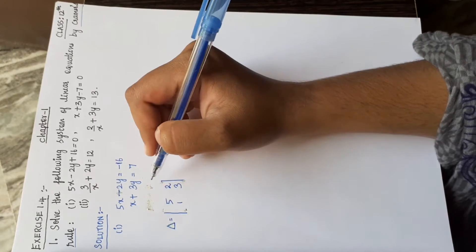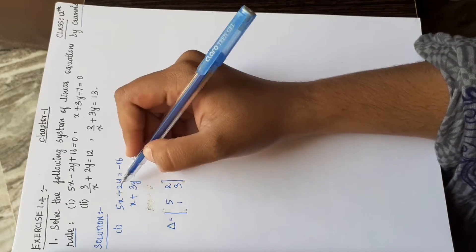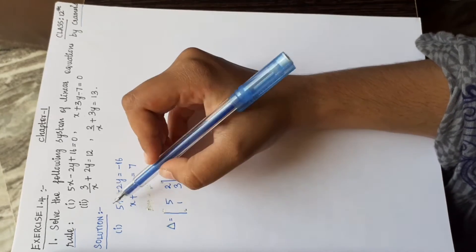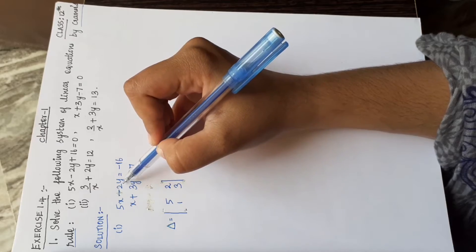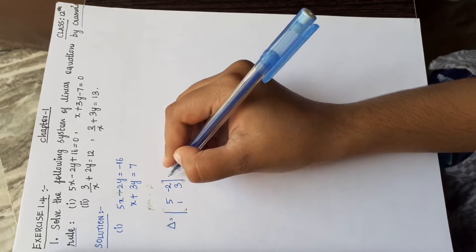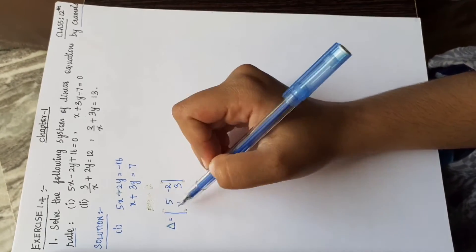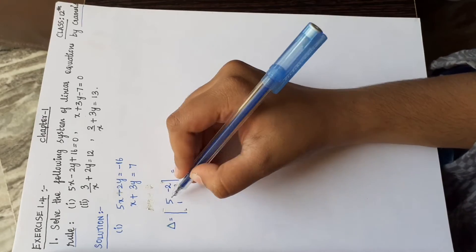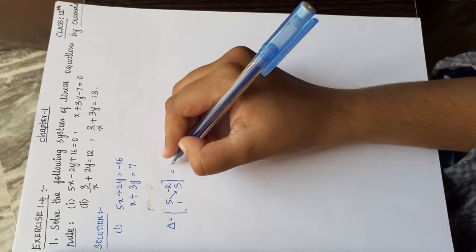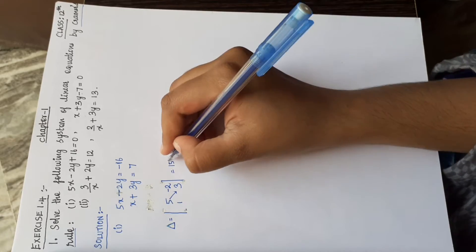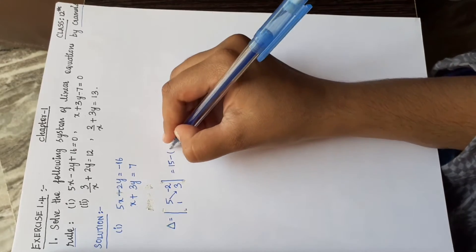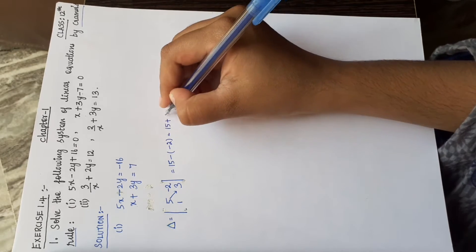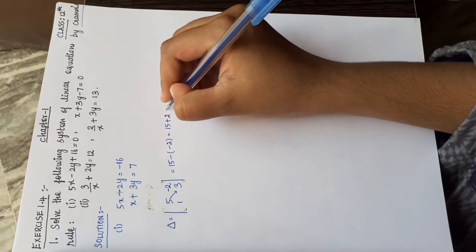Now find the delta value — the determinant of the coefficients of x and y. The coefficient matrix is [5, -2; 1, 3]. So delta = (5×3) minus (1×(-2)) = 15 minus (-2) = 15 + 2 = 17.